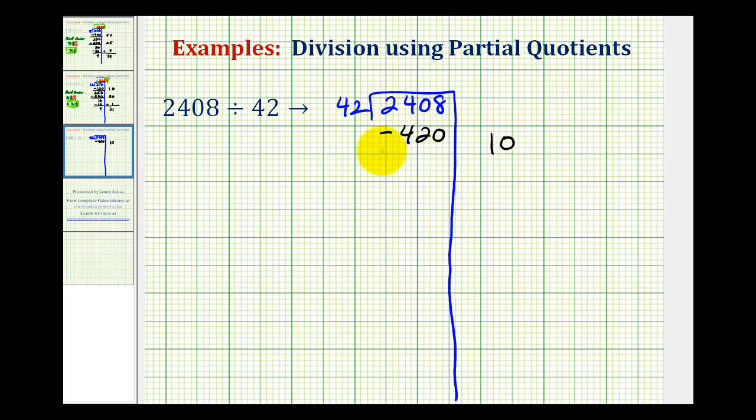10 times 42 would be 420. We'll find the difference. Here we have 8. We need to change this to a 3. So now we have 10 minus 8. That's 8. 23 minus 4 is 19. Now we want a simple product that involves 42 that's less than 1,988. Well, if 10 times 42 is 420, hopefully we recognize that 20 times 42 would be twice this amount, or 840. So let's go ahead and use a partial quotient of 20.